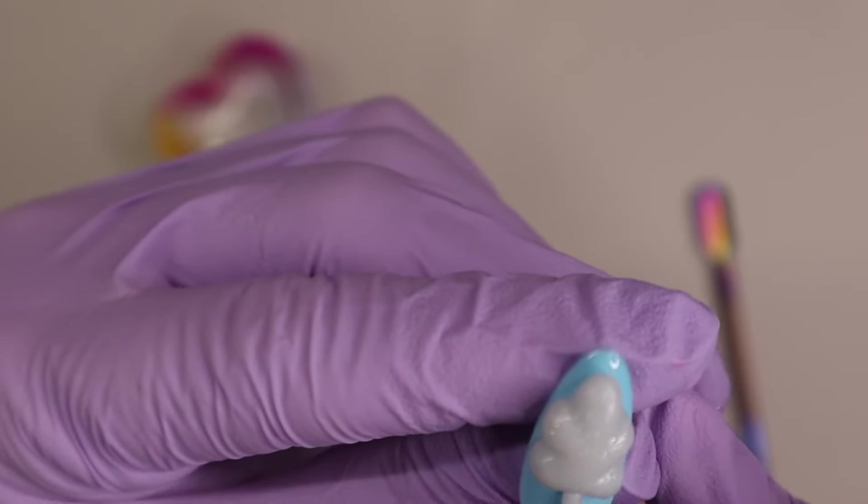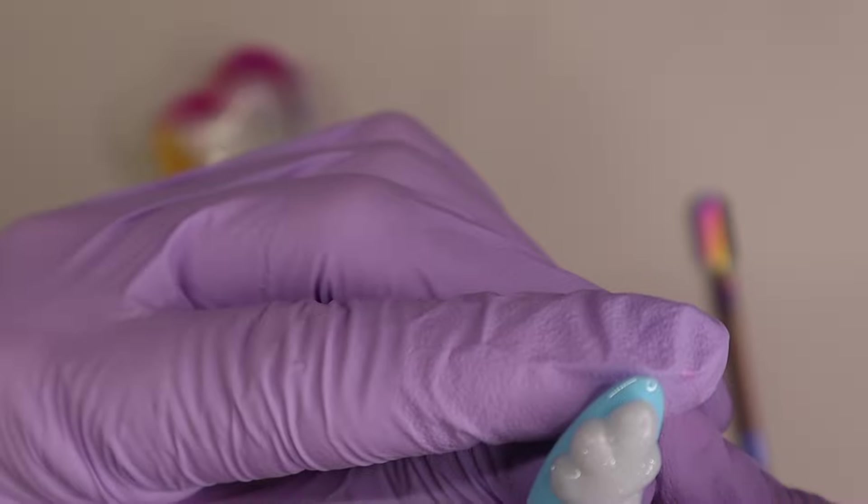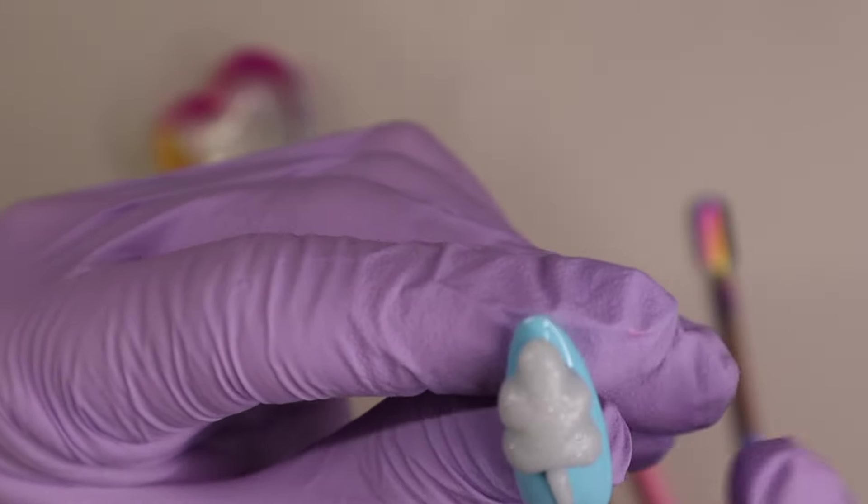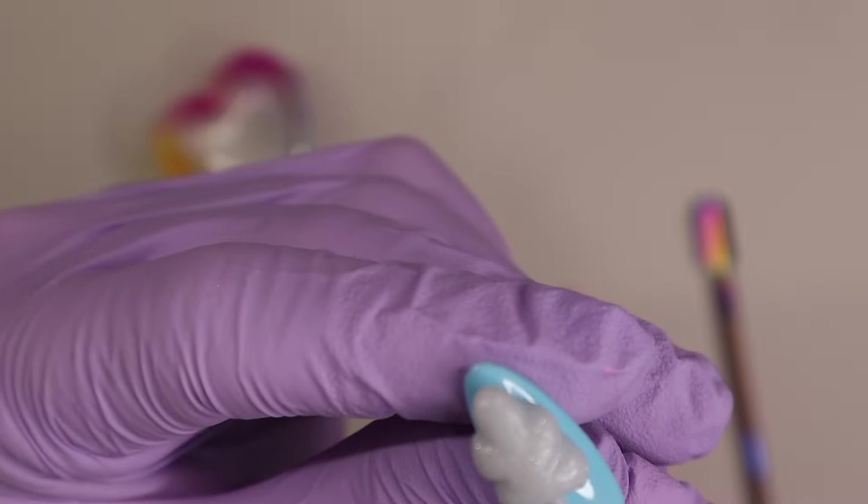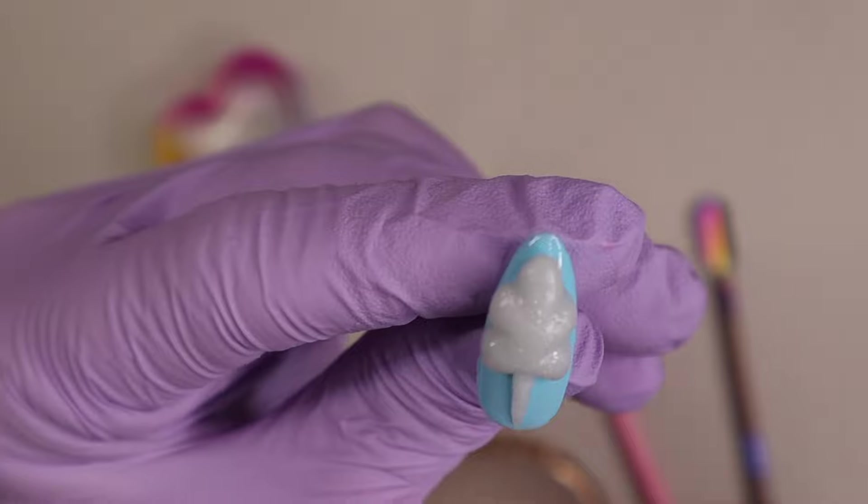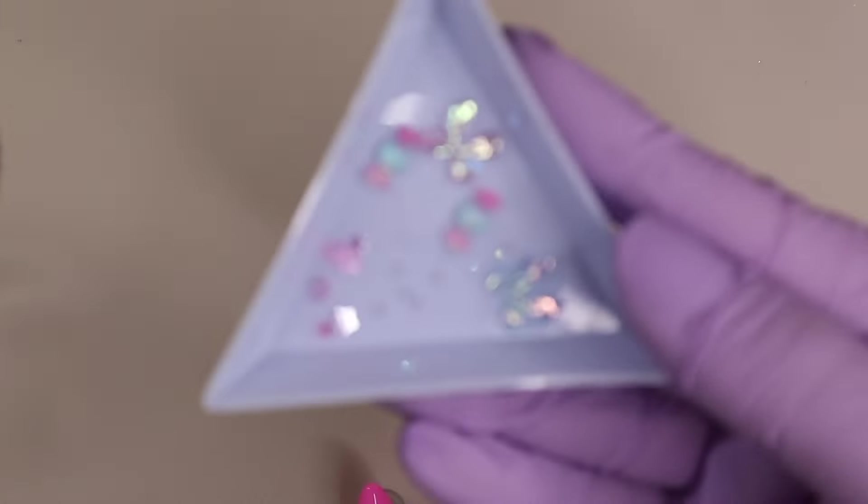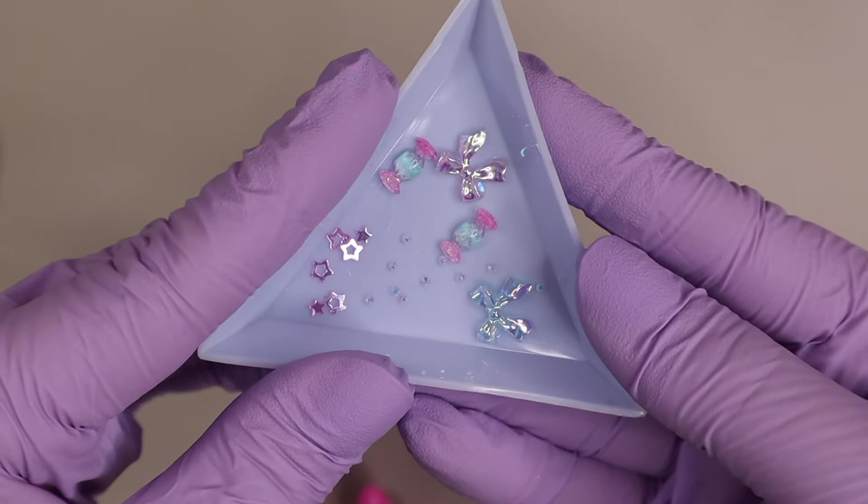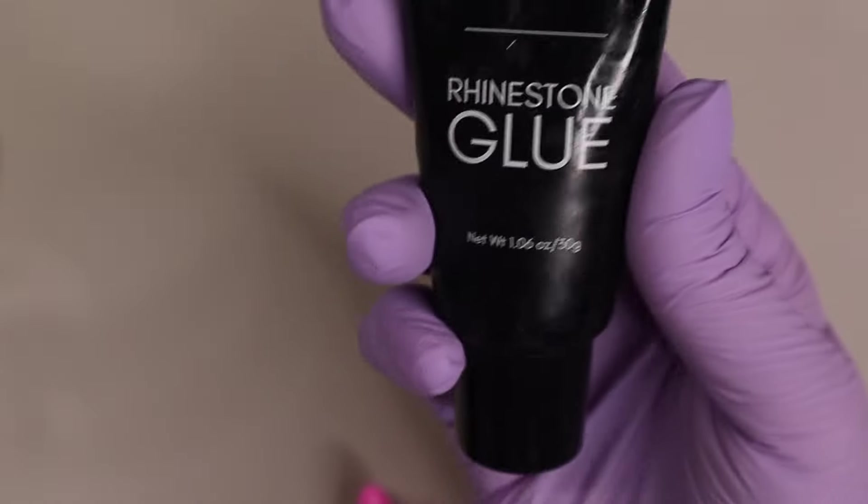I just went ahead and popped that on to the cotton candy and I tidied it up and made sure it looked how I wanted it to before curing. We will come back to this nail a little later when I'm ready to paint it. For now we will work on the rest of the nails. These are the charms I will need. I just pulled them out so they were ready to go.